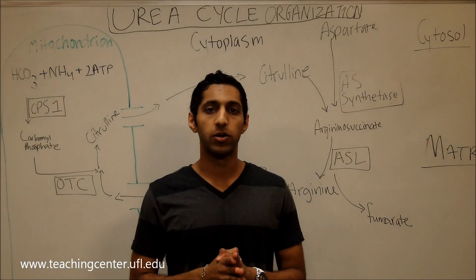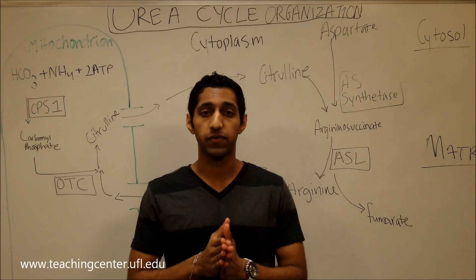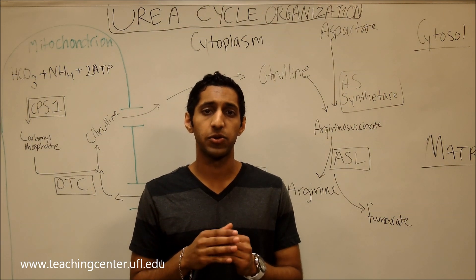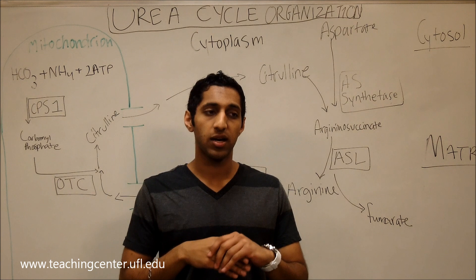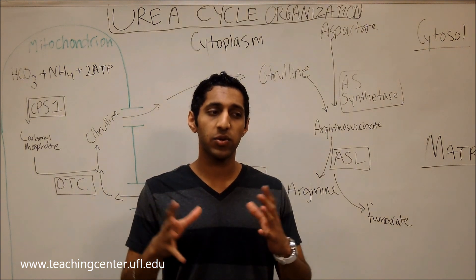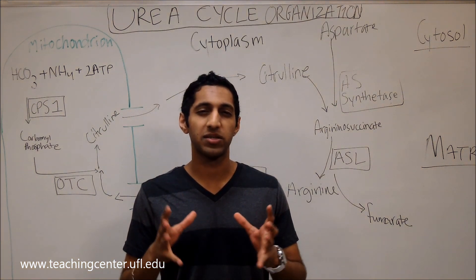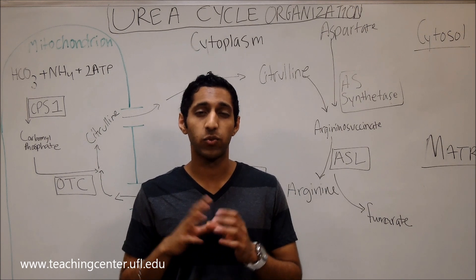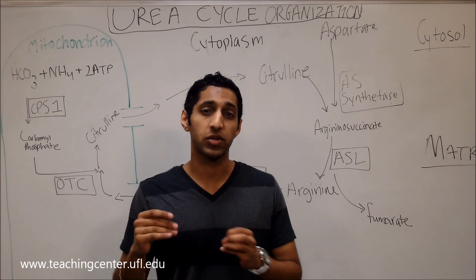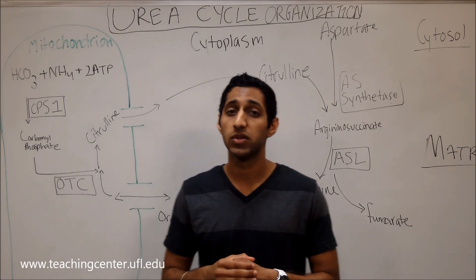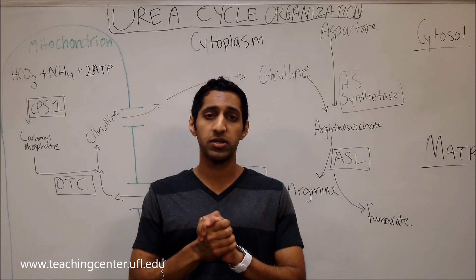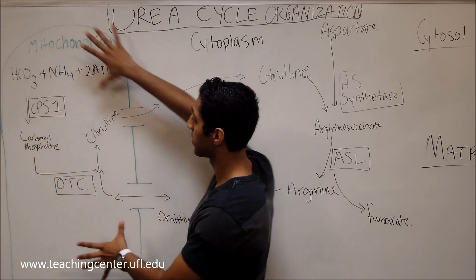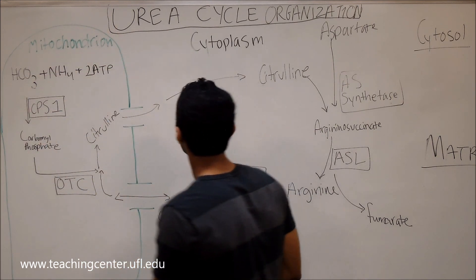Hey guys, this is a brief video on the organization of the urea cycle. The organization of the urea cycle helps give you an understanding of what the urea cycle is for and gives you an idea of which parts occur in which places. Two major places the urea cycle can occur are in the mitochondrion or the cytoplasm.